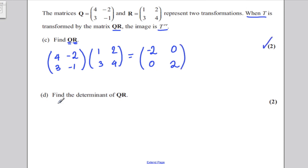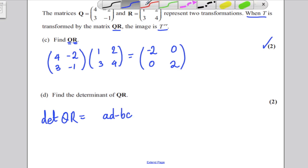It says find the determinant of QR. The determinant of QR, well, the determinant is AD subtract BC. Now, do note, some students get confused and they think it's 1 over AD subtract BC. No, it isn't. This is the determinant. 1 over AD minus BC is just using the formula for the inverse. You use 1 over determinant.